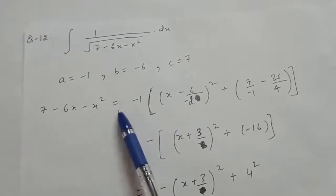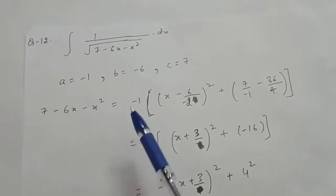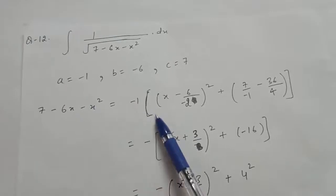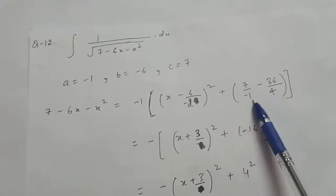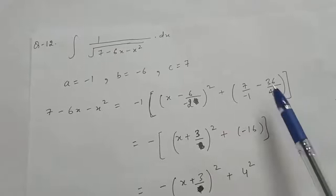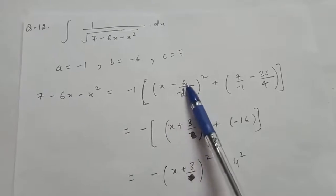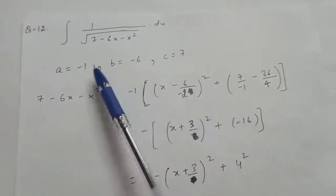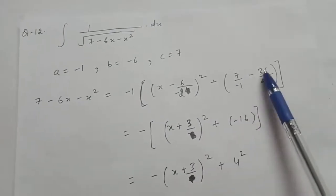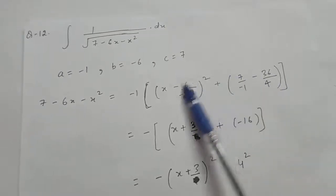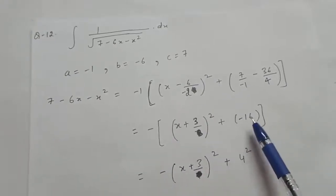Applying the completing the square method, this becomes minus 1 times [(x minus 6/(minus 2)) whole square] plus 7/(minus 1) minus 36/4. Solving this simplifies to minus [(x + 3)² minus 16].